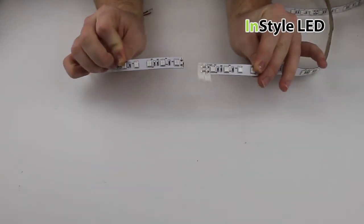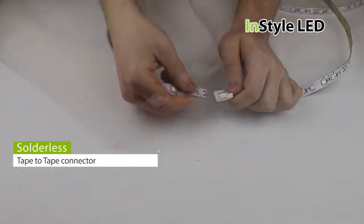You can use solderless tape to tape connectors to join two pieces of LED tape back together.